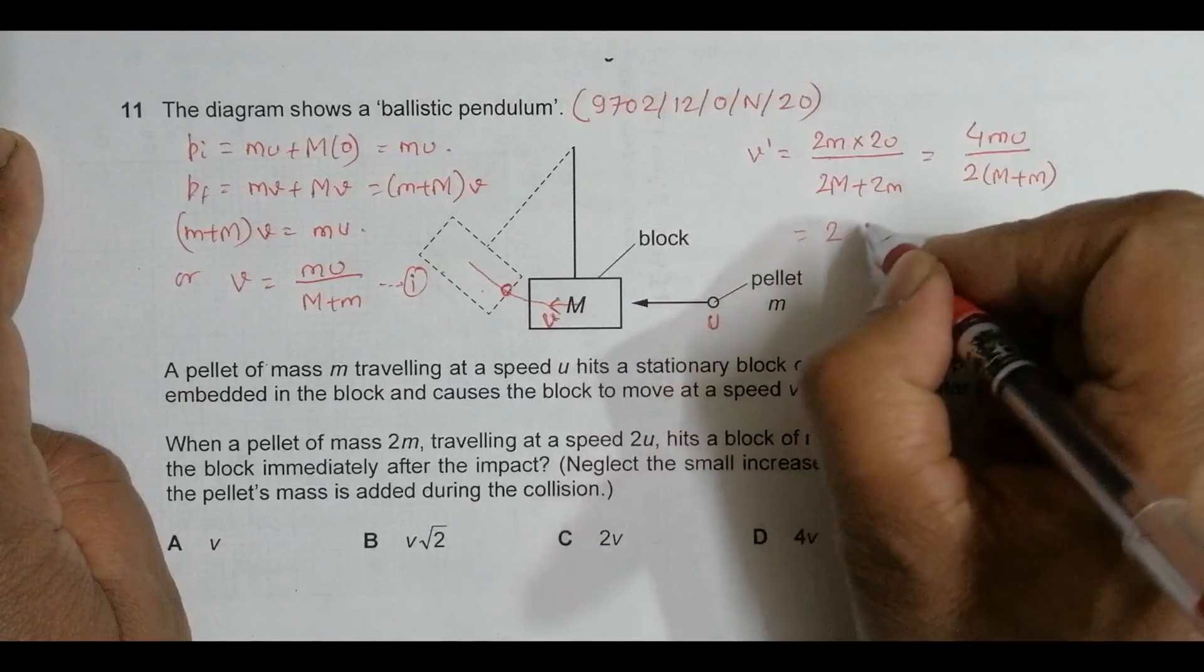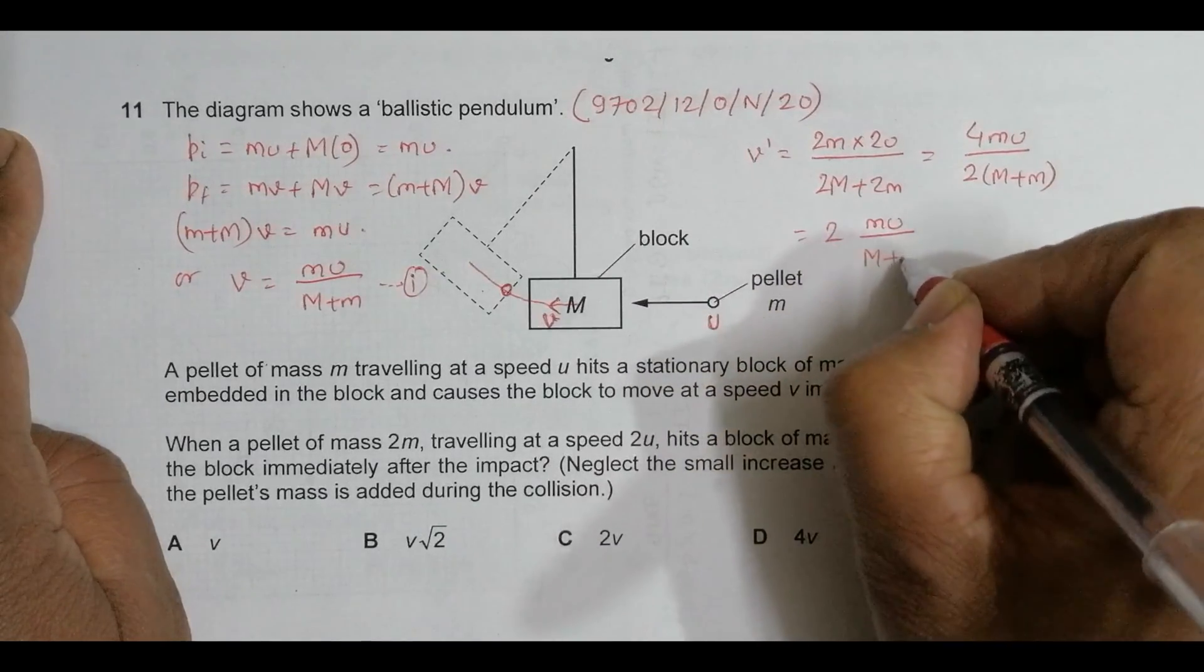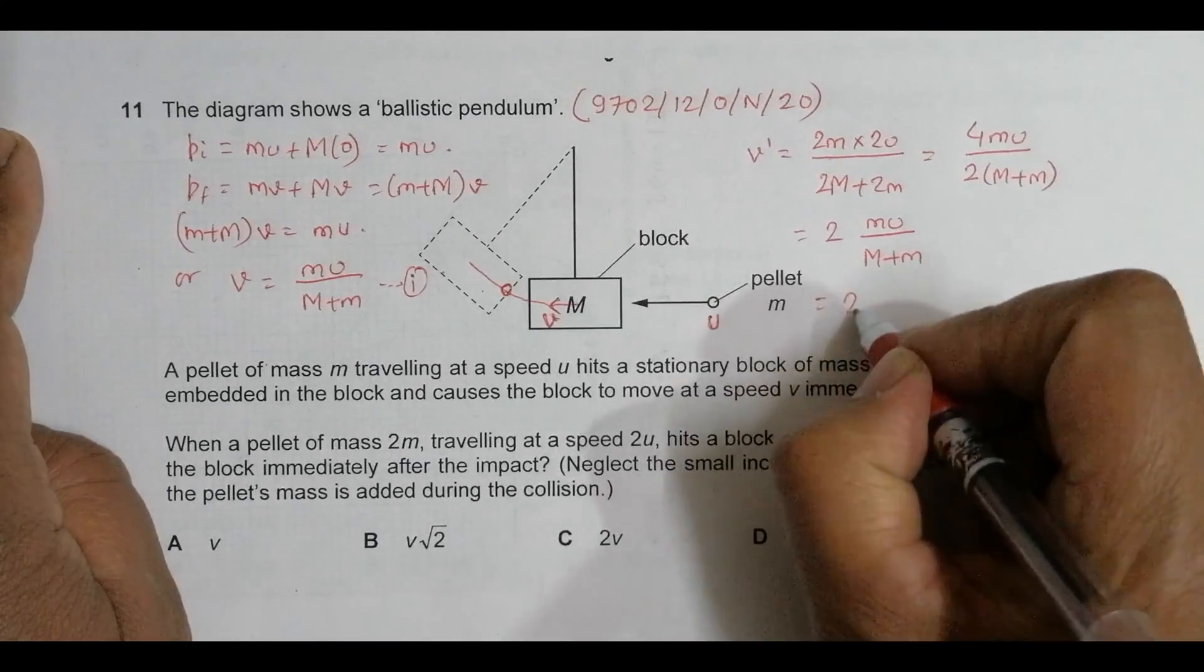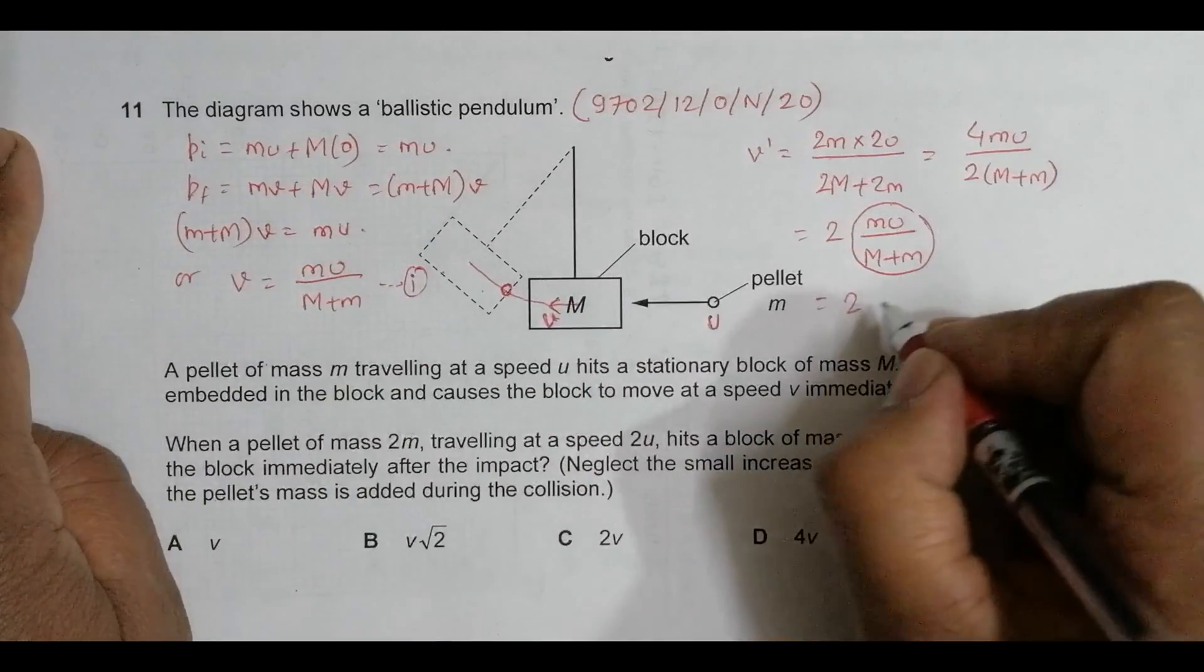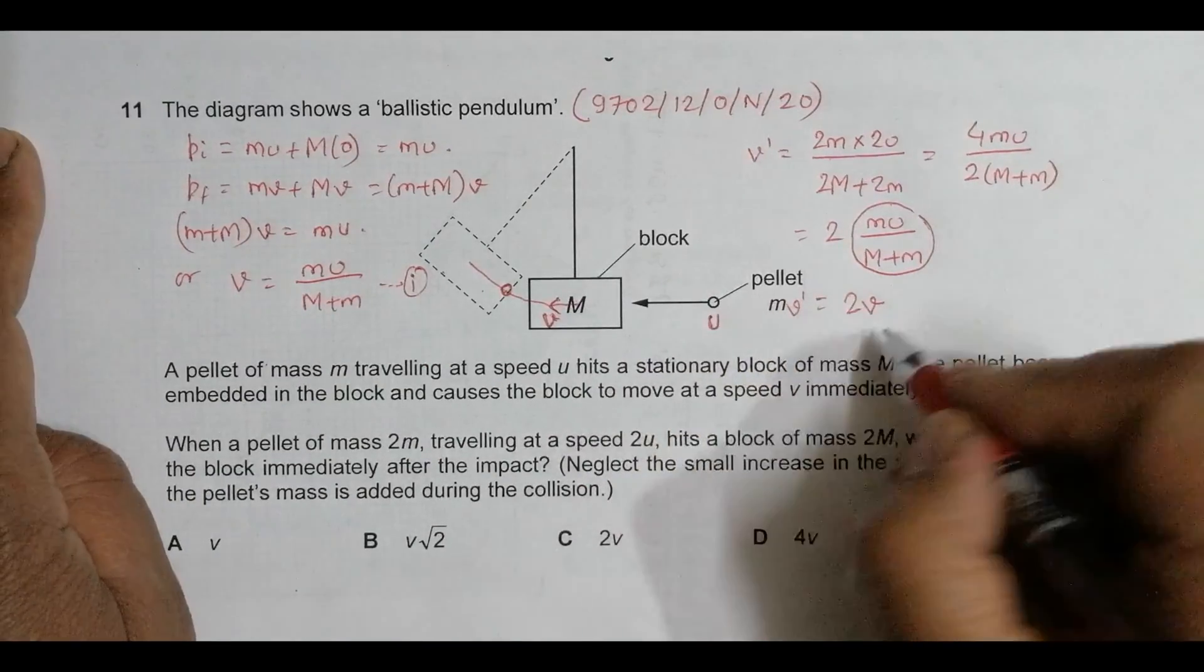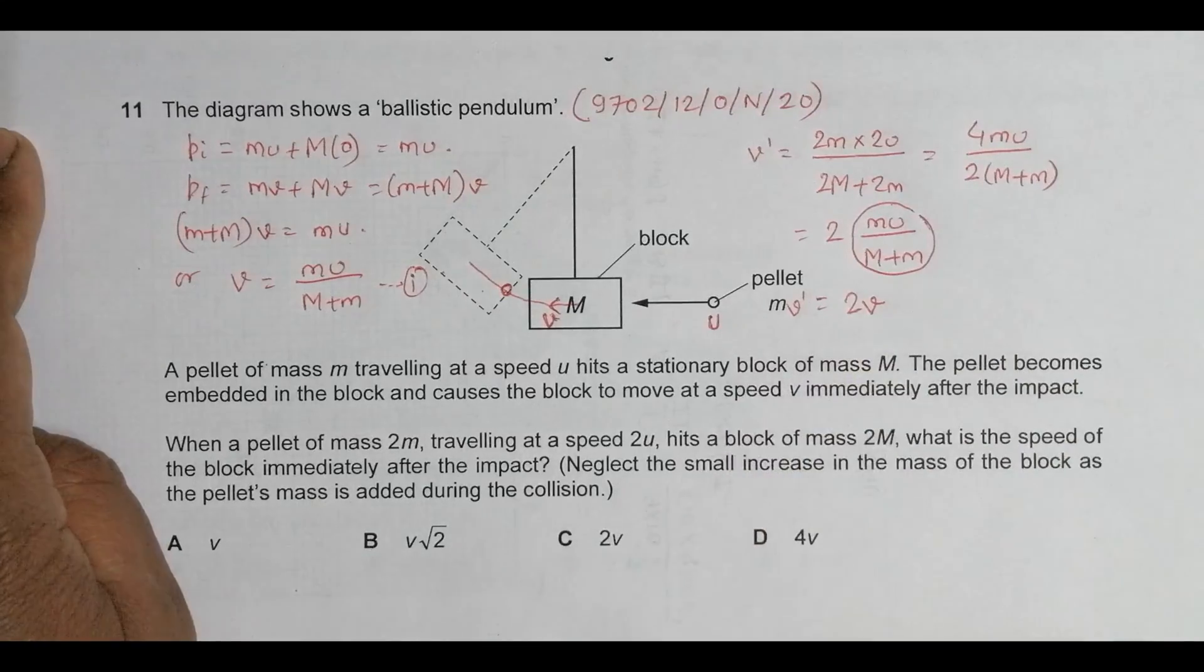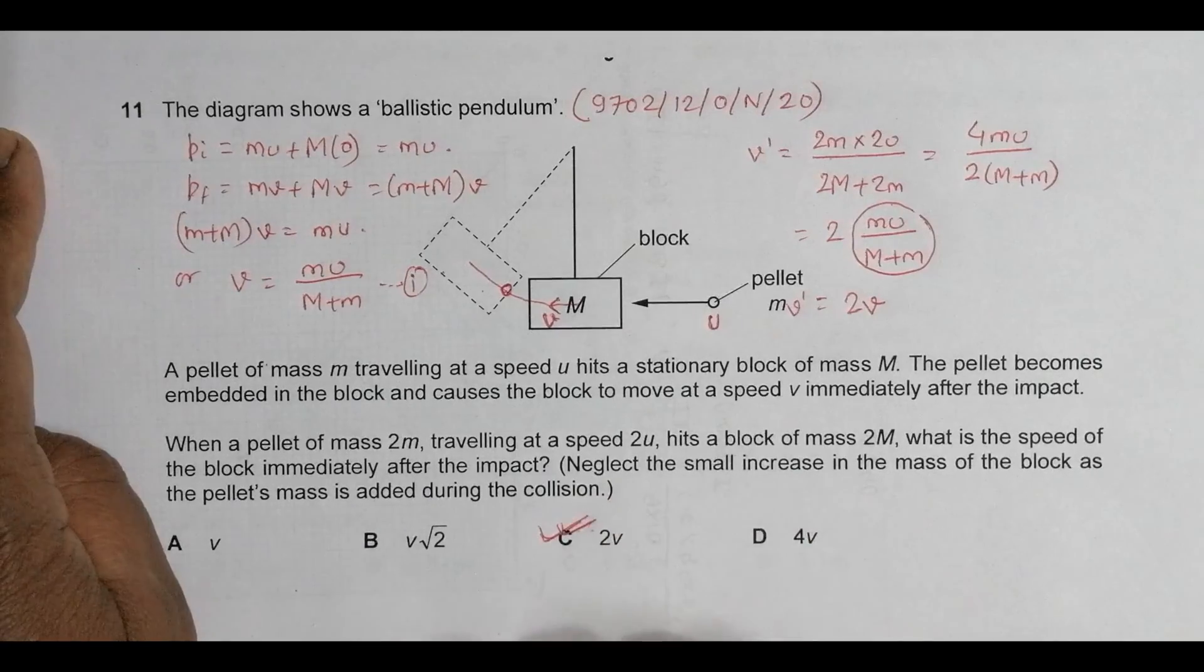This simplifies to 4mu/4M, which equals 2 times the whole initial expression, equal to 2V. So the new velocity equals 2V. Looking at the answer choices, choice C is the correct answer.